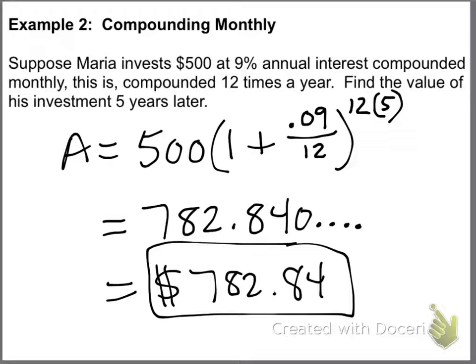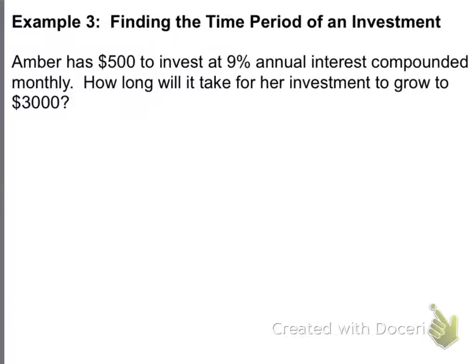So, again, plug and chug. I mean, you just got to make sure the right numbers go in the right places. Make sure you have your formulas available to you. Now, this one's a little different. This says, Amber has $500 to invest, at 9% annual interest, compounded monthly. How long will it take for her investment to grow to $3,000? Well, we're going to use the interest compounded K times per year. So, we're going to use this formula. But, here's the thing.